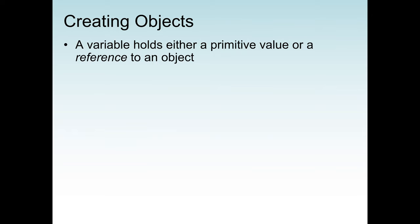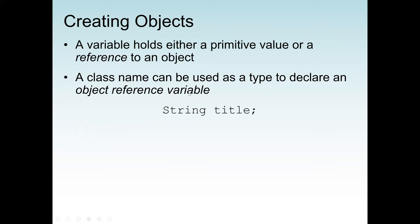A class consists of methods and the variables it will work on. The variable normally stores data that the methods need. So when we declare a variable as a String, which is an object, we can use the method to copy the string or to know the length of the string, how many characters we have, and so on. That's the major difference between a primitive type and an object type or reference.